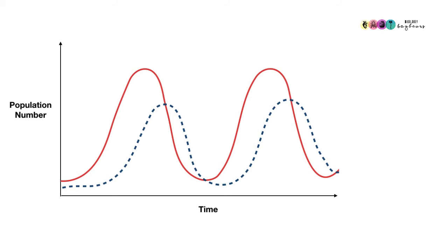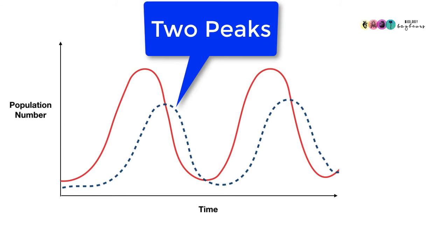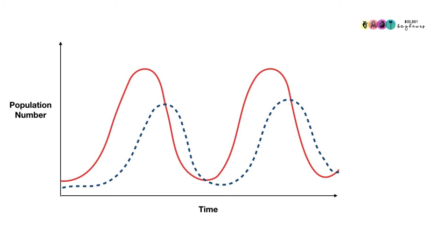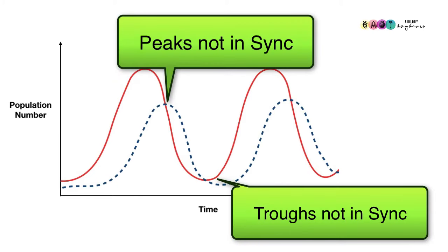You could be asked to draw your own predator-prey graph. Please make sure that you have at least two peaks, two for your predators and two for your prey. Make sure that your axes are labeled correctly. Y-axis should be population number and X-axis should be time. And also ensure that your peaks and your troughs for your predators and your prey are not in sync.